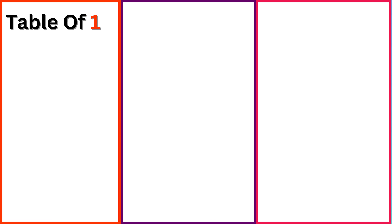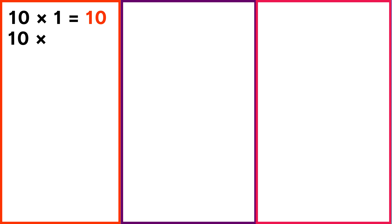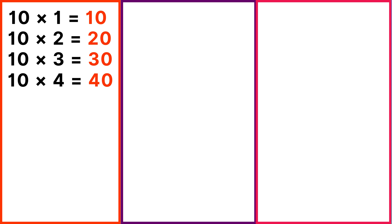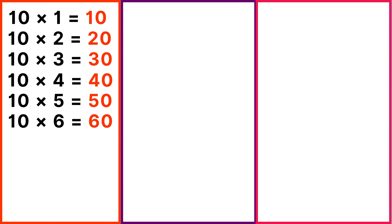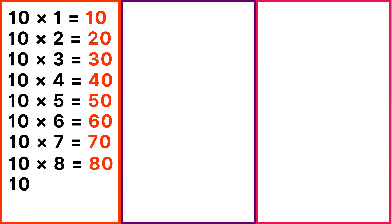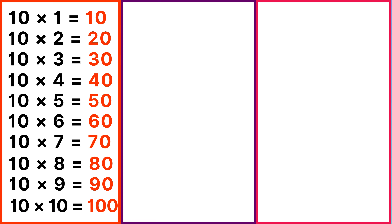Table of 10: 10 ones are 10, 10 twos are 20, 10 threes are 30, 10 fours are 40, 10 fives are 50, 10 sixes are 60, 10 sevens are 70, 10 eights are 80, 10 nines are 90, 10 tens are 100.